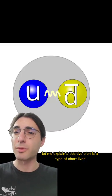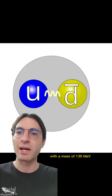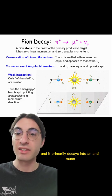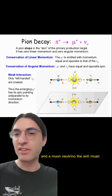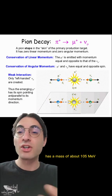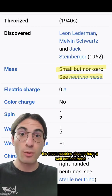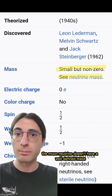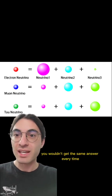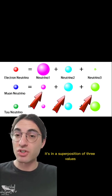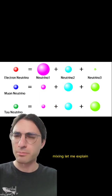A positive pion is a type of short-lived subatomic particle with a mass of 139 MeV, and it primarily decays into an anti-muon and a muon neutrino. The anti-muon has a mass of about 105 MeV. The trouble is, the muon neutrino doesn't have a well-defined mass. If you could weigh a muon neutrino, you wouldn't get the same answer every time — it's in a superposition of three values. This is a result of the phenomenon called neutrino mixing.